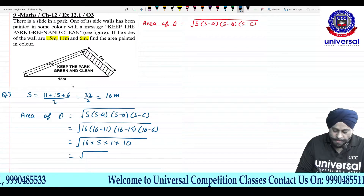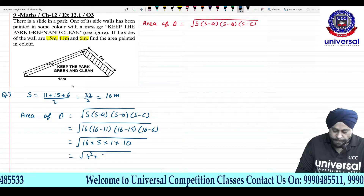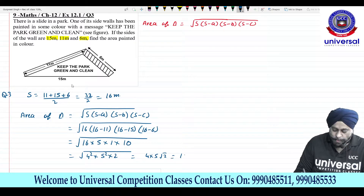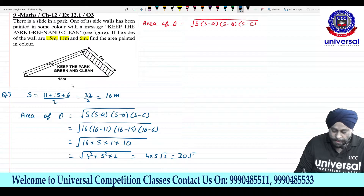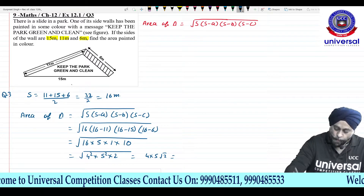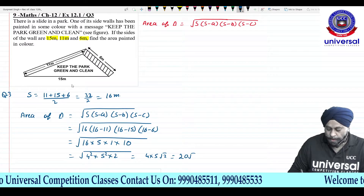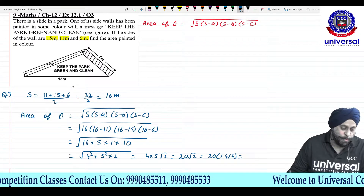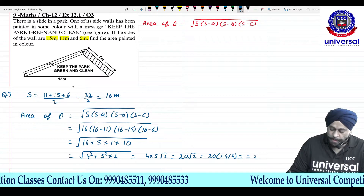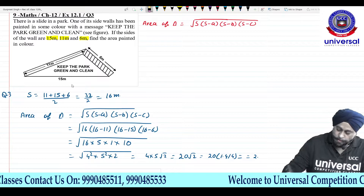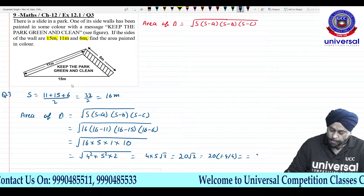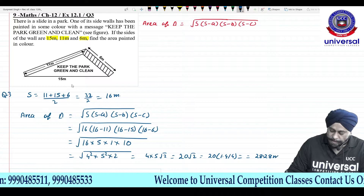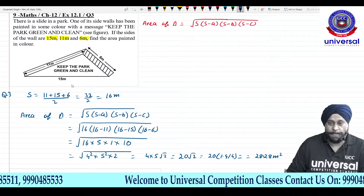Under root of 16 × 5 × 1 × 10. Looking carefully: 16 is 4 squared, and 10 gives us 5 × 2. So this becomes 4 × 5 × root 2, which is 20 root 2. And root 2 is 1.414, so 20 × 1.414 gives us approximately 28.28 meter square. This is the area of our triangle by Heron's formula.